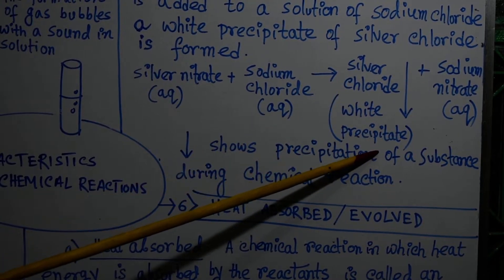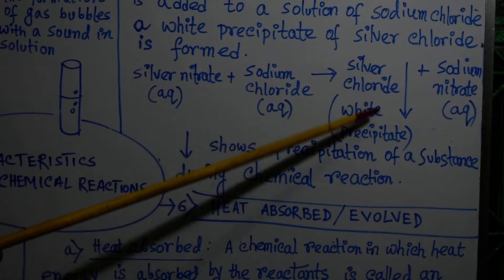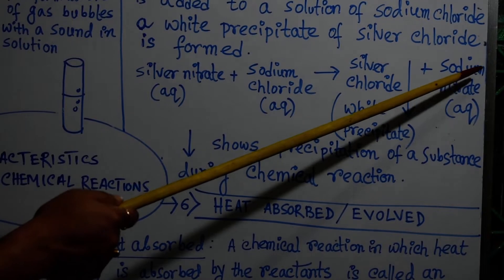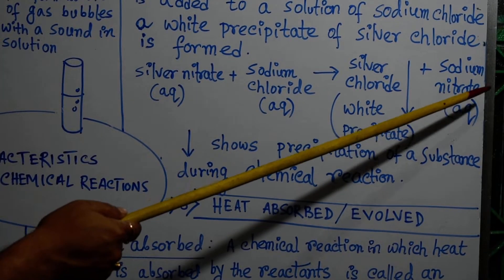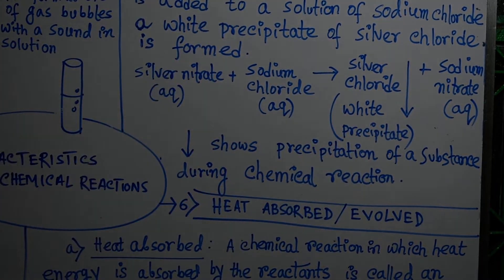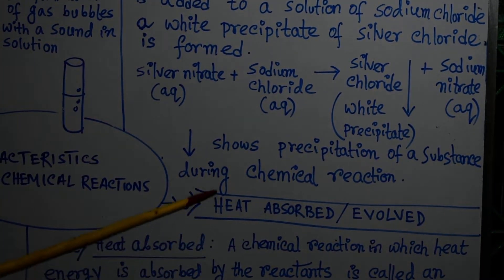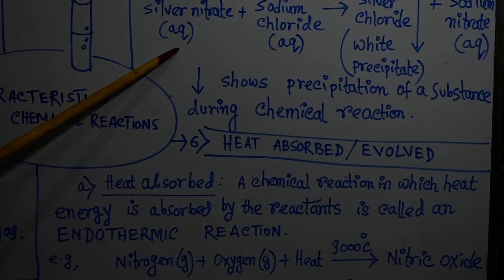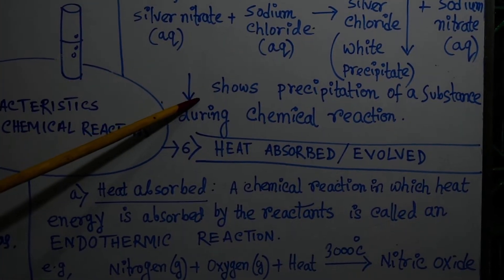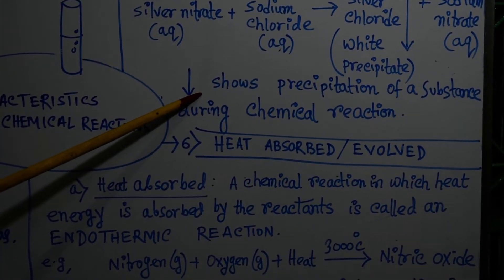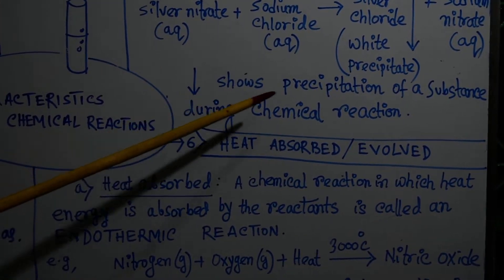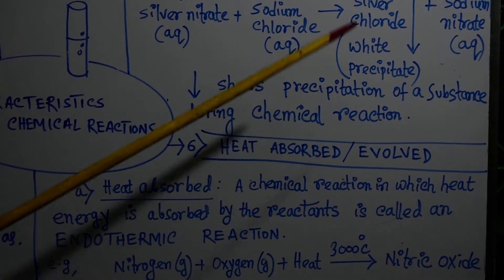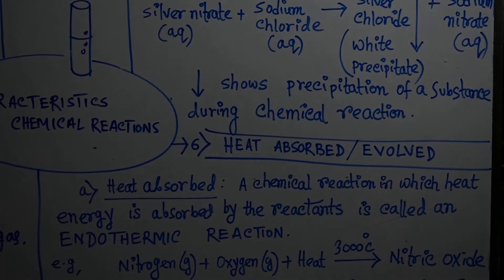Silver chloride is an insoluble solid and is thus termed as a precipitate. The color of this precipitate is white. Please note: the arrow pointing downwards shows the precipitation of a substance during the chemical reaction.